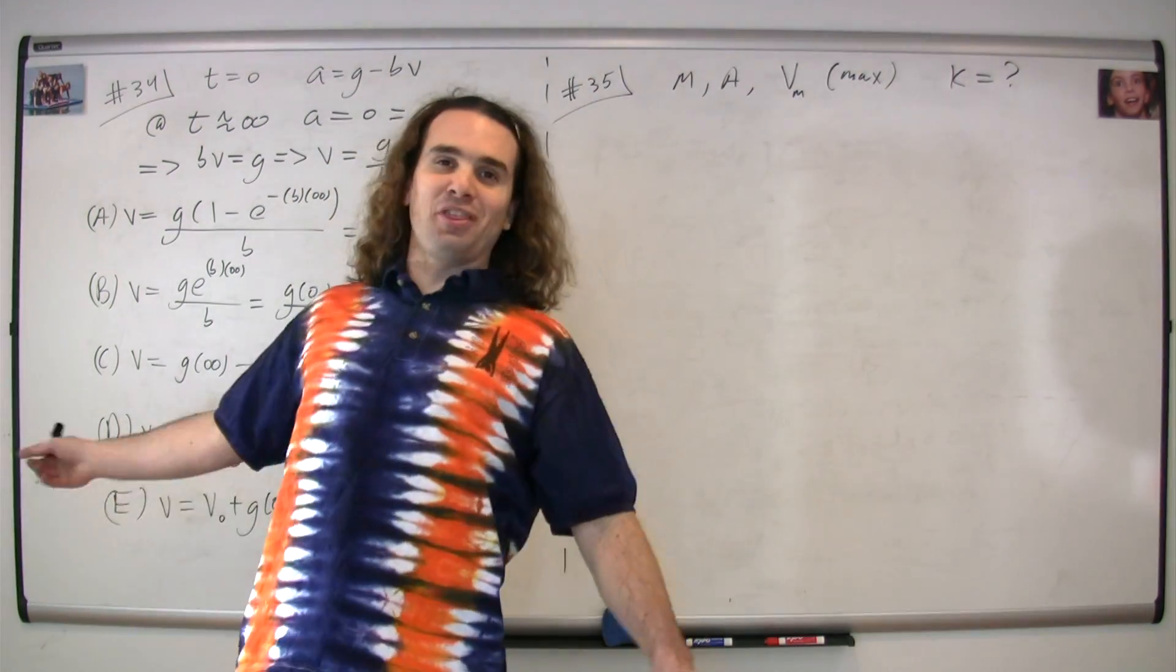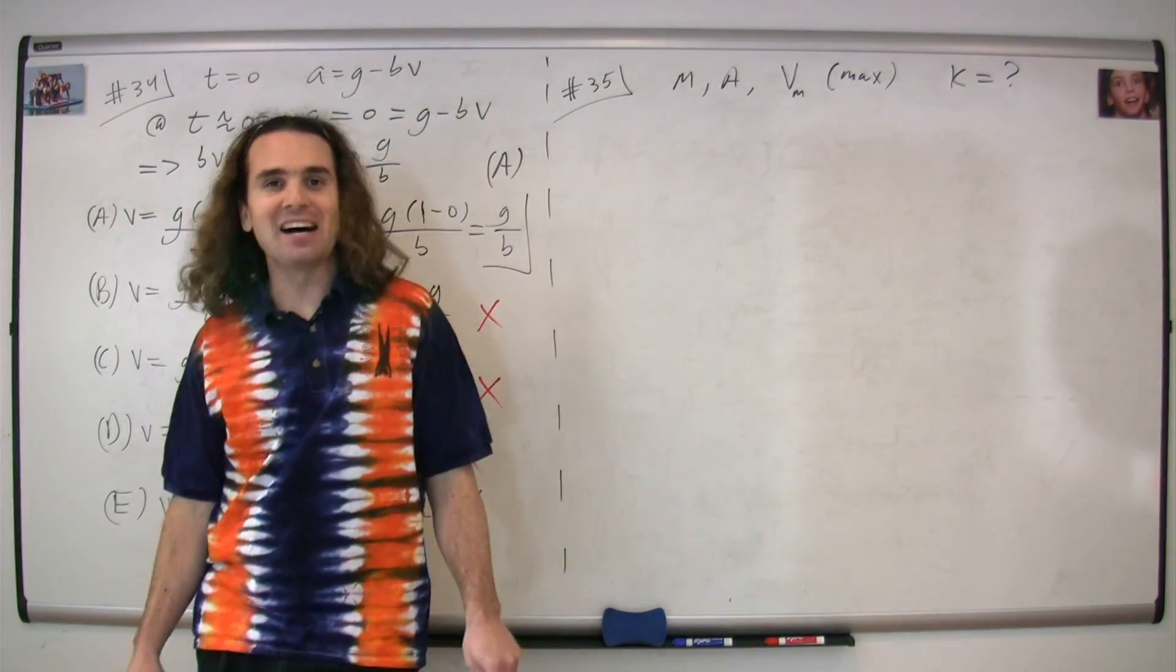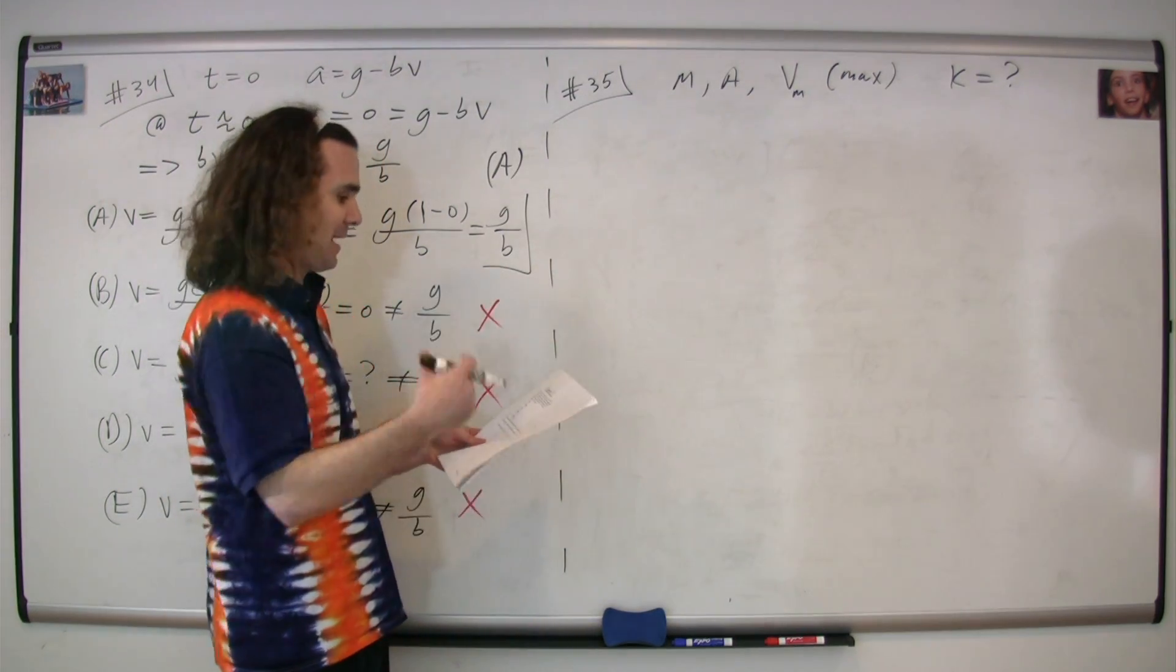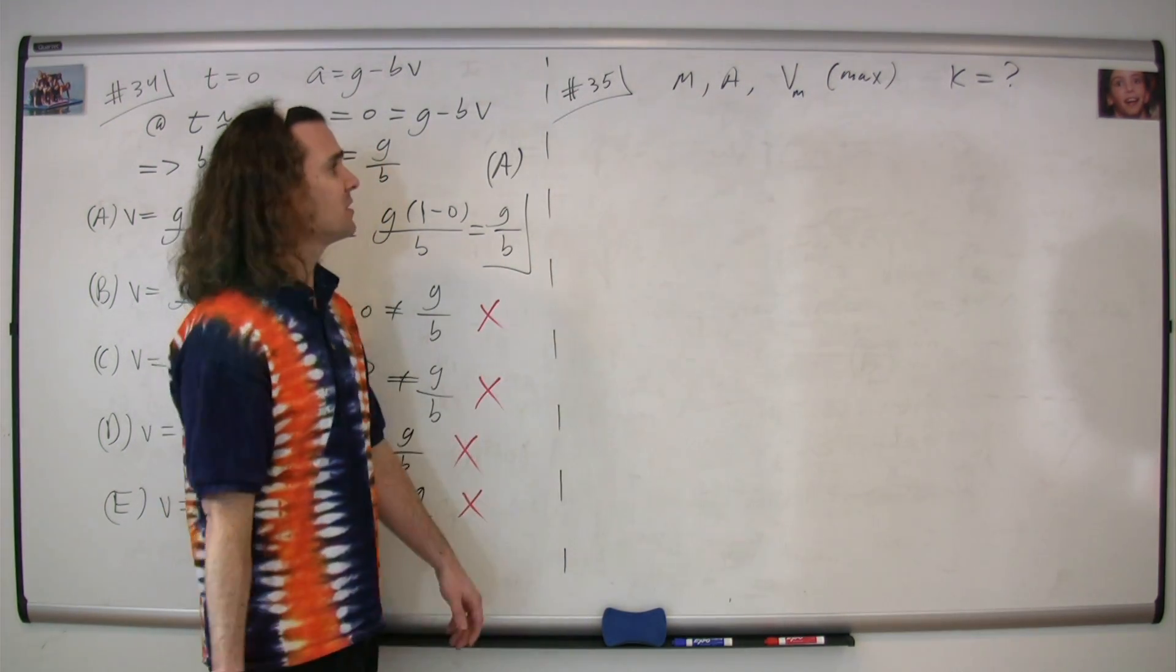Mr. P: Question 35, the last question on the test. Alright, so we have an ideal massless spring fixed to a wall, it's going back and forth. The question is, what's the spring constant?